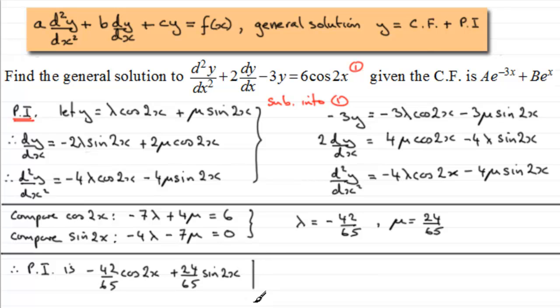So what we have next is the general solution. I'll just abbreviate that to GS. And that's going to be the complementary function, which is Ae to the power minus 3x plus Be to the power x. And then to that we just have to add our particular integral.